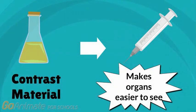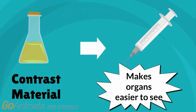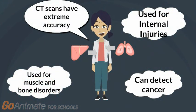In some CT scans, a dye called contrast material is taken by the patient through injection, solution, or inserted rectally. This dye makes structures and organs easier to see on the pictures. Because of the extreme accuracy and detail of these pictures, CT scans are used for a myriad of the body's internal situations, including internal injuries from trauma, muscle and bone disorders, detecting lung and liver diseases, and also detecting different types of cancer.